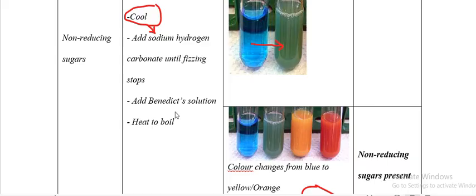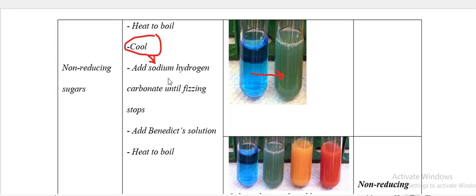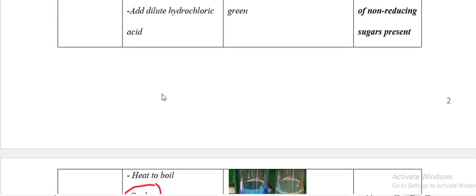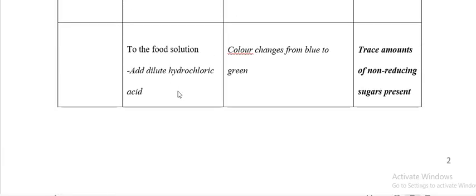You may be asked the role of sodium hydrogen carbonate in the non-reducing sugars test: it is to neutralise excess hydrochloric acid. The role of hydrochloric acid is to convert non-reducing sugars to reducing sugars.